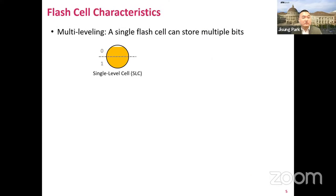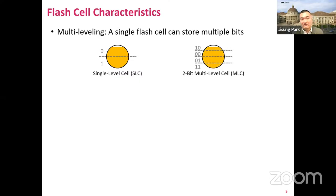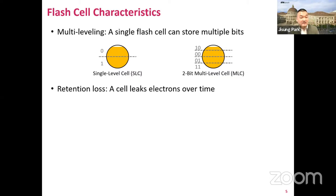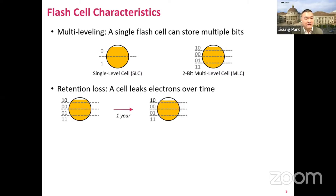If we make only two threshold voltage states, a cell can store only a single bit. But with more precise threshold voltage control and more reference voltage levels, we can store multiple bits in a single cell, which is called the multilevel cell technique. Unfortunately, a flash cell leaks its electrons over time, commonly called retention loss. In this example, we can still read the correct data from a cell after one year retention time because the cell's charge level is still higher than the reference voltage level.